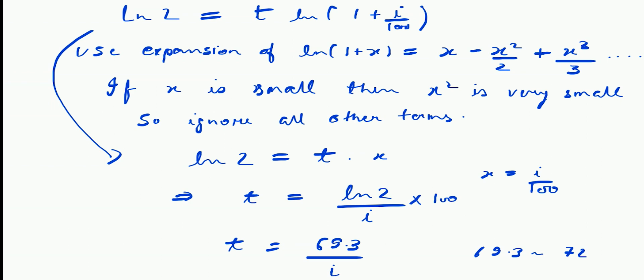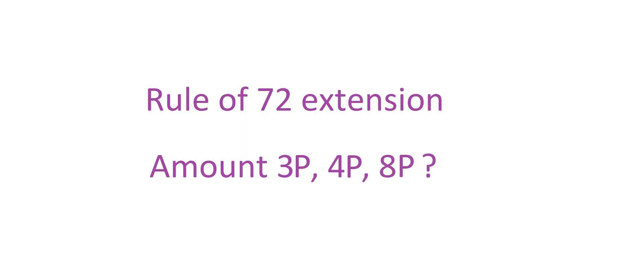Otherwise would have decreased the denominator. We have to compensate by increasing the numerator to 72 instead of 69.3. In the next video, we will see how to leverage the rule of 72 to calculate the time period when the principle has tripled or has increased by any power of 2.